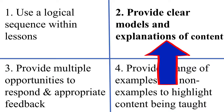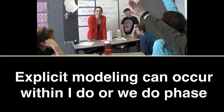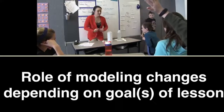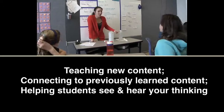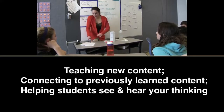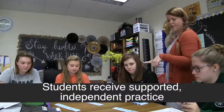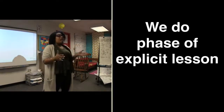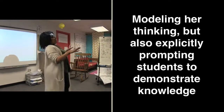Component 2: Provide clear models and explanation of content. Explicit Instruction should include modeling by the teacher when appropriate. This can occur within the I Do or We Do phases of explicit instruction. From day to day, the role of modeling in a lesson may change based on the lesson's objective, which can include teaching new content, connecting to previously learned content, and helping students see and hear your thinking about the content being taught and how you as the teacher solve problems. Once the teacher models, it's the student's turn to have guided and supported practice opportunities, with the teacher monitoring performance and systematically fading supports until students have reached mastery. In the following clip, Ms. Samuels is within the We Do phase of Explicit Instruction, modeling her thinking for solving a double-digit subtraction problem with regrouping, while also explicitly prompting her students to demonstrate their knowledge.